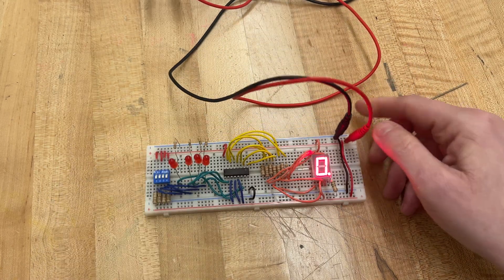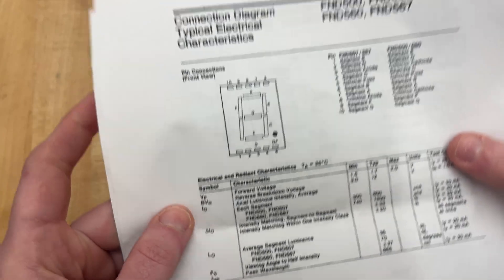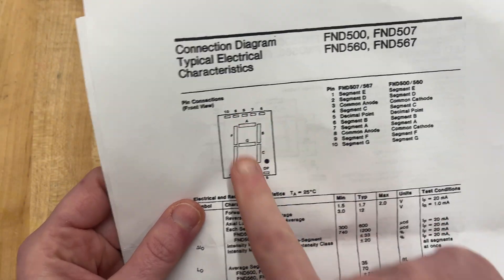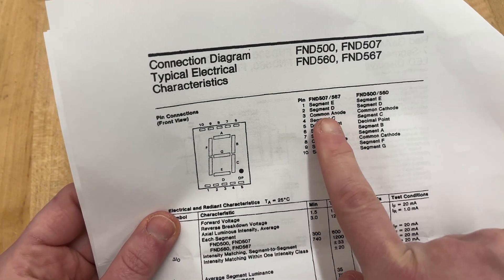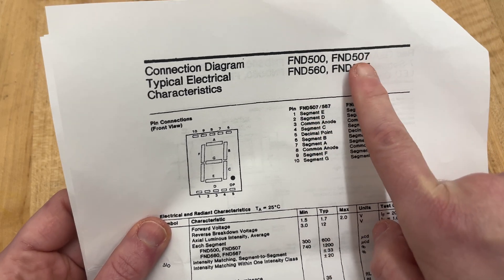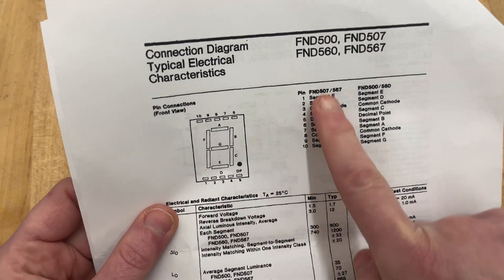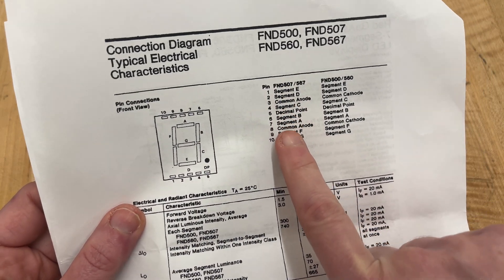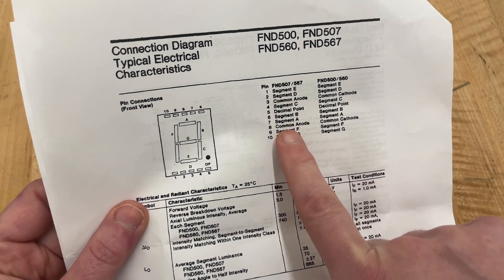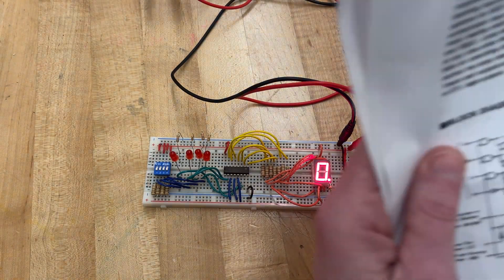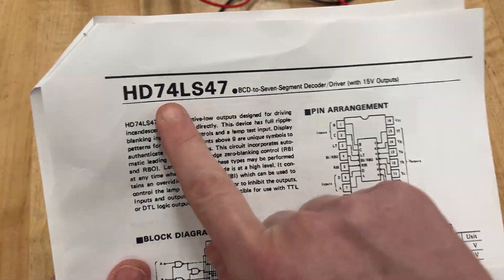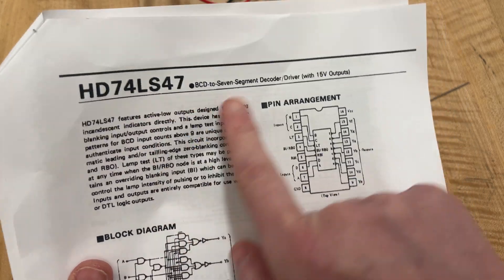Be sure you are looking at your data sheet. So this right here—we're using the common anode, which is the 507 segment display—and so this is going to tell you which pins correlate to which segments. And then you're also going to use the 74LS47 data sheet.